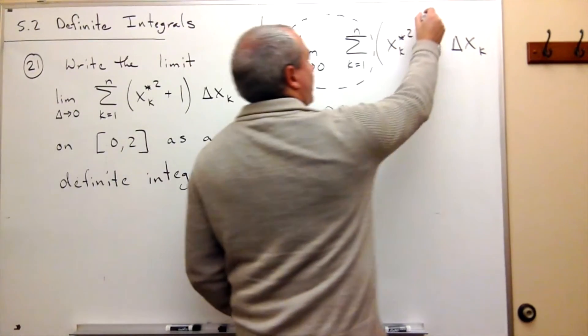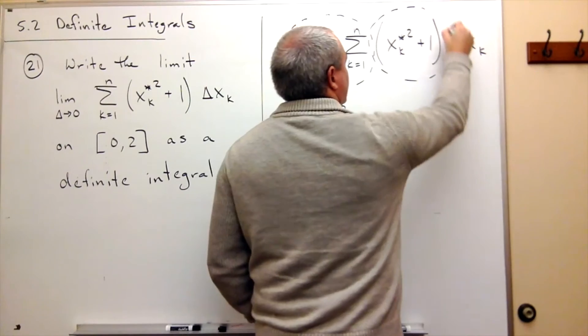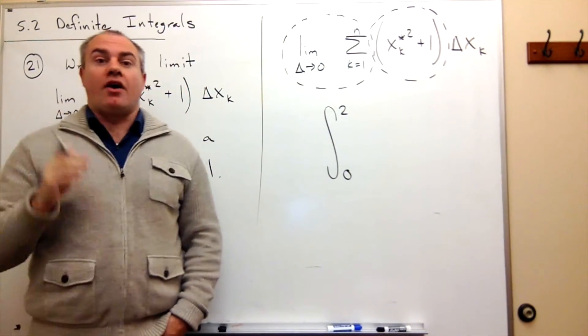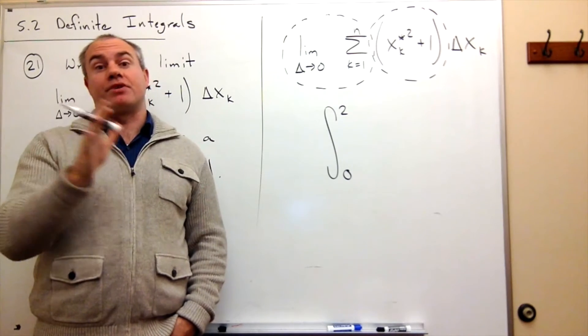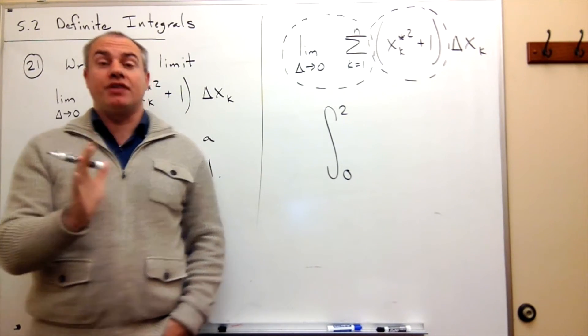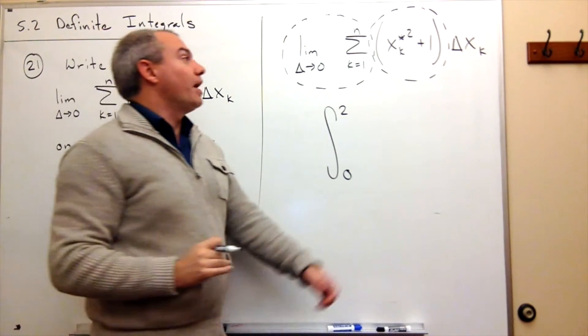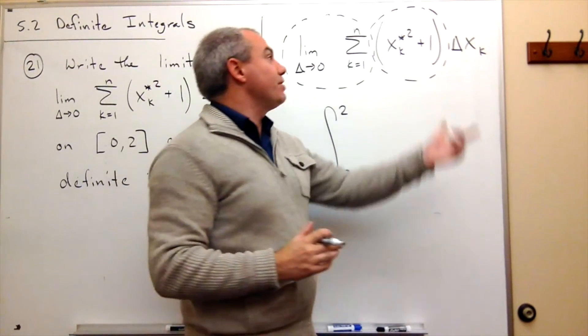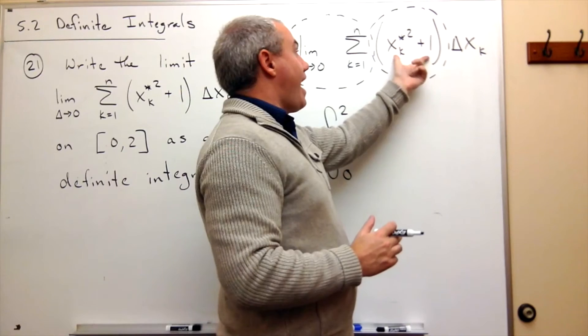Now the second piece that we look at is the piece involving x sub k star. Now x sub k star represents that special point in each one of our rectangles, but as the rectangles get smaller and smaller that can just be represented by x.